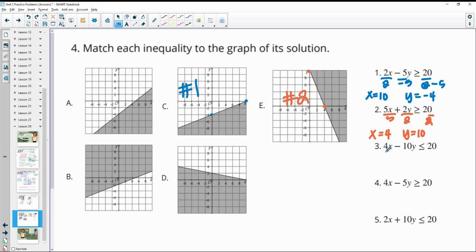Number 3, we can do 4x and 20 if we plug in a 0 for the y. So we get x equals 5. And then we're going to divide by negative 10 to get the y intercept. So 20 divided by negative 10 is negative 2. So we're looking for x equals 5 and y equals negative 2. So x equals 5, y equals negative 2 is our intercepts in D. So number 3 goes with B.